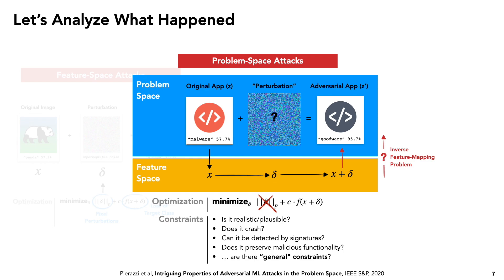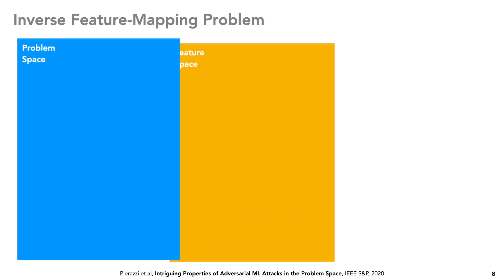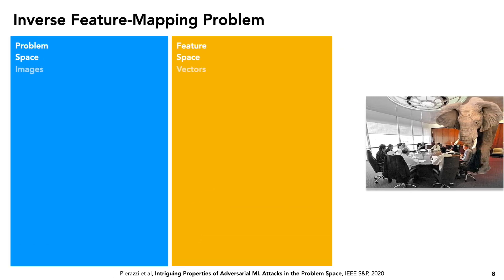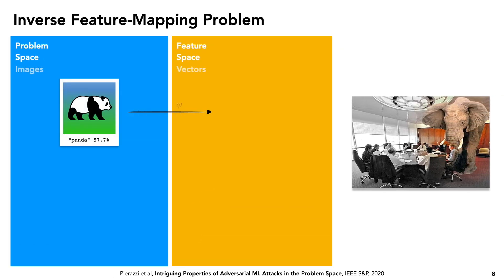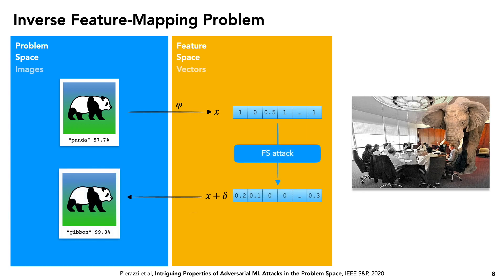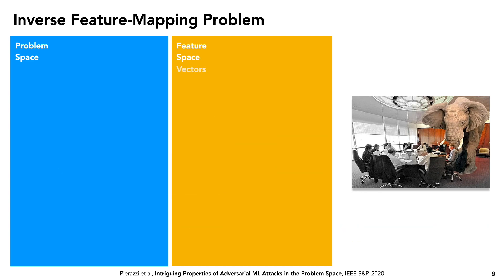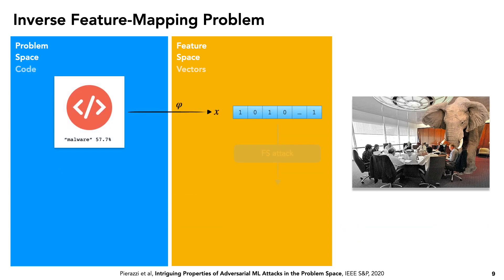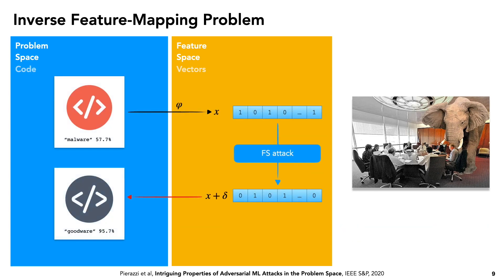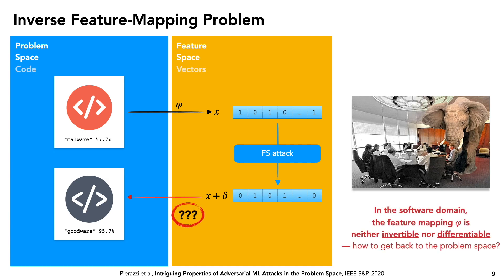We also have the problem of how to generate a functioning adversarial app based on our feature space calculations — the inverse feature mapping problem. This is the elephant in the room. In the image domain, the feature mapping is differentiable; you can back-propagate and discretize to find the new input. Whereas in the software domain, the feature mapping is neither invertible nor differentiable, so it's not immediately clear how to get back to a problem space example, and perhaps the transformations you want to make just aren't available — like what happened with our panda friend.